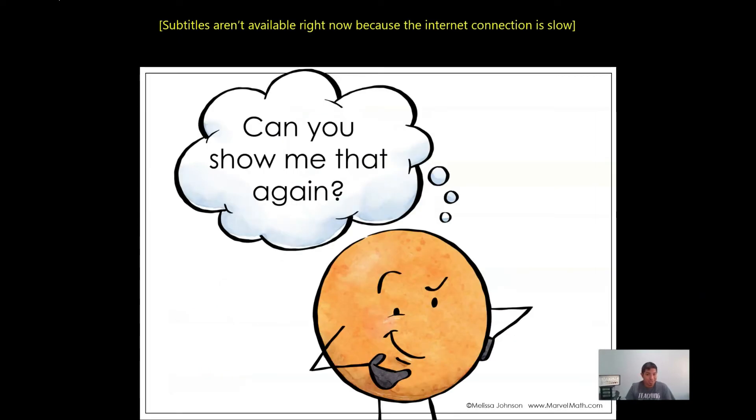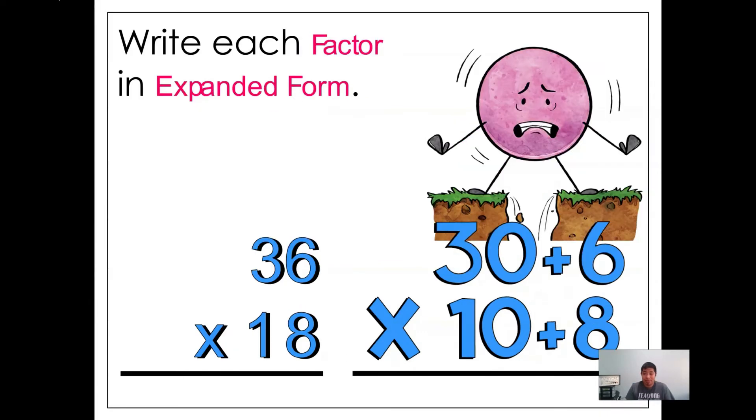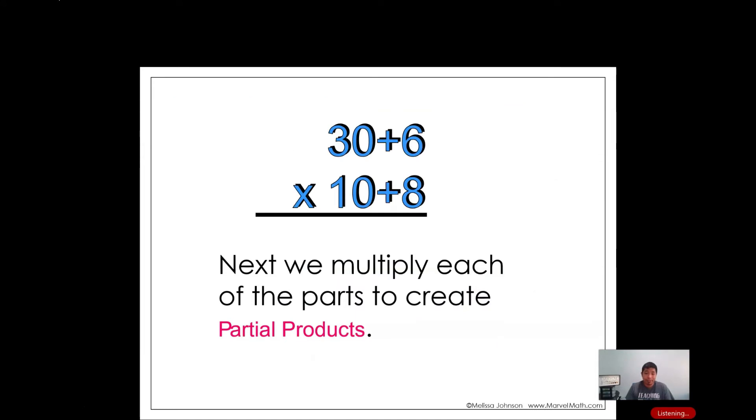Next we're gonna do it one more time, so make sure you pay attention. So we're gonna break 36 times 18. We're gonna write each factor in its expanded form for its values, which is 30 plus 6, and then 10 plus 8.